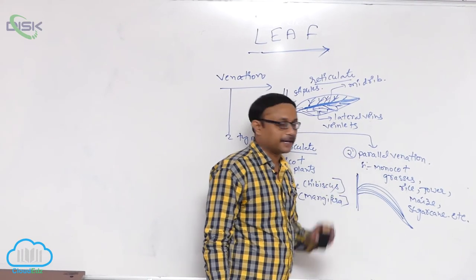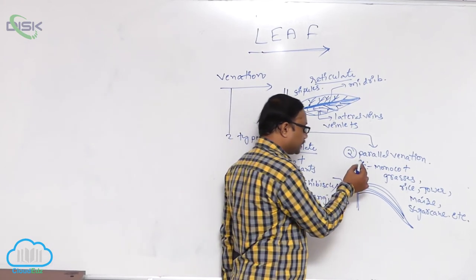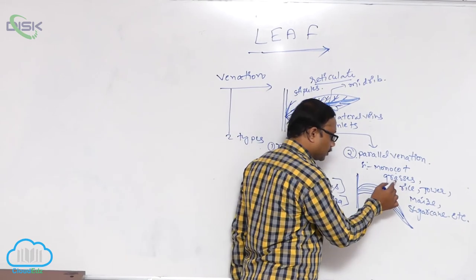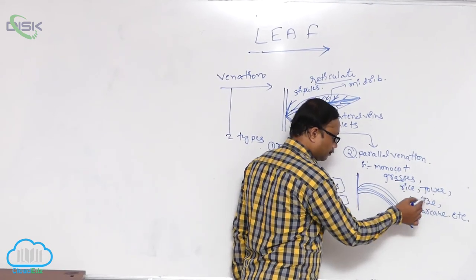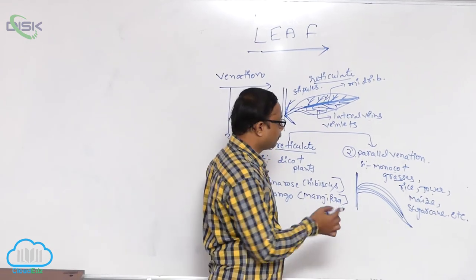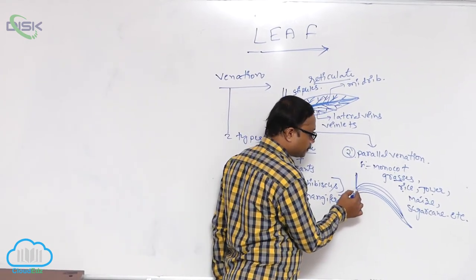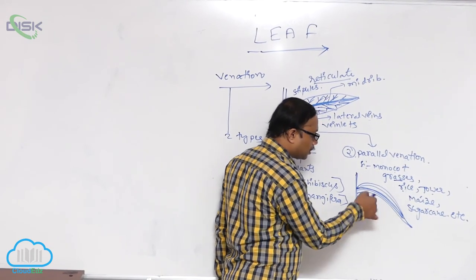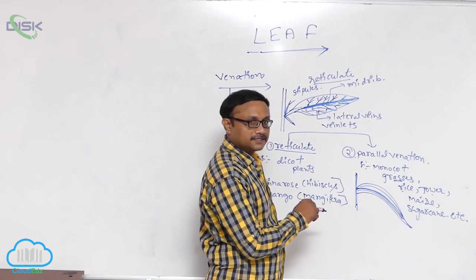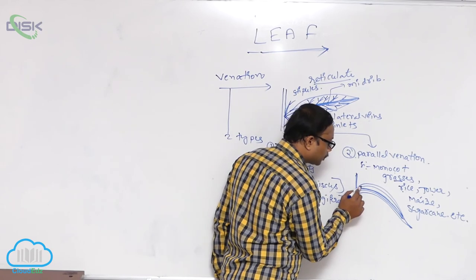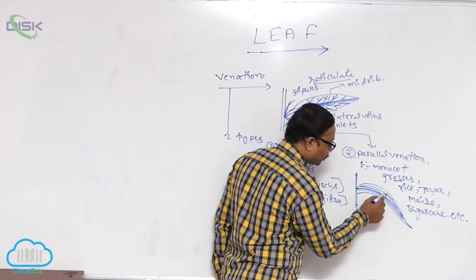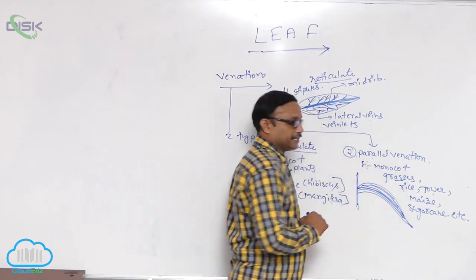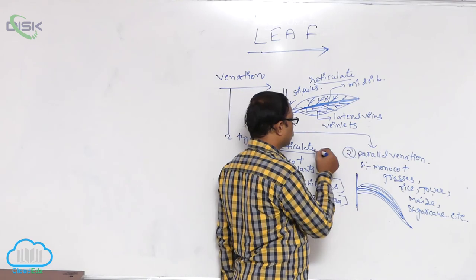The second type is parallel venation, which generally appears in monocot plants such as grasses, rice, maize, and sugarcane. In this type of venation, the midrib is present at the center, and the lateral veins and veinlets run parallel to the axis — they are arranged parallel to each other. That is known as parallel venation.